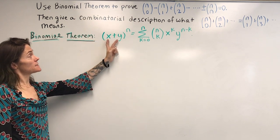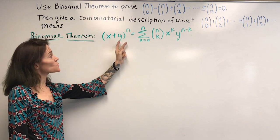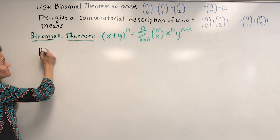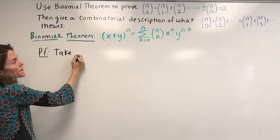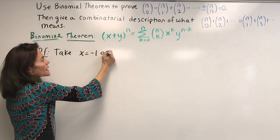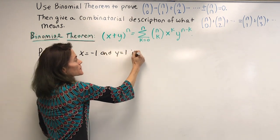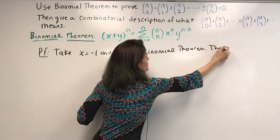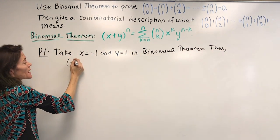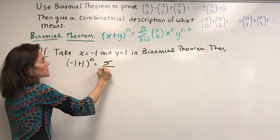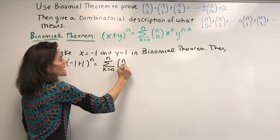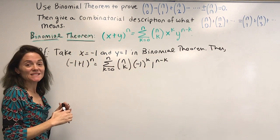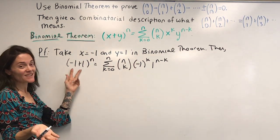The binomial theorem is about expanding powers of a binomial x plus y — it's quite a powerful theorem. We will use it here: let x equal minus 1 and y equal 1 in the binomial theorem. Then we have minus 1 plus 1 to the n equals the sum from k equals 0 to n of n choose k times minus 1 to the k times 1 to the n minus k. The left side is 0 to the n, which is 0.